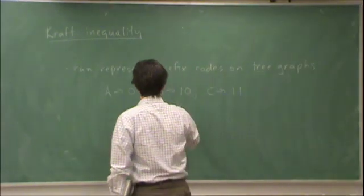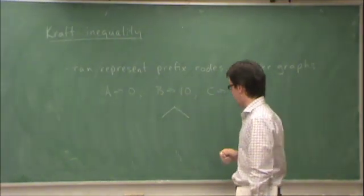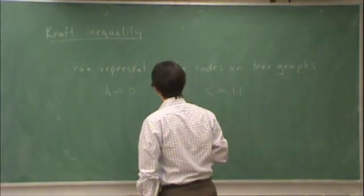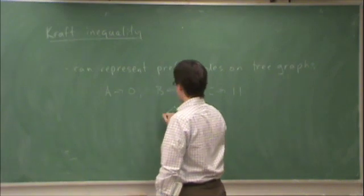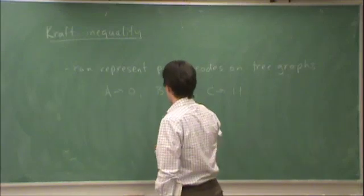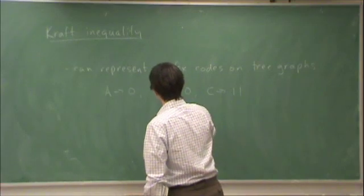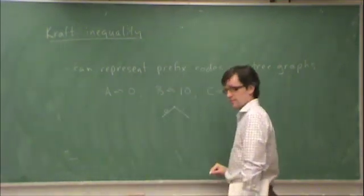So I'm going to represent this on a tree. And in this tree, edges represent symbols in the encoding alphabet. So edges here represent symbols in U. So I can label each edge with the symbol that's used.